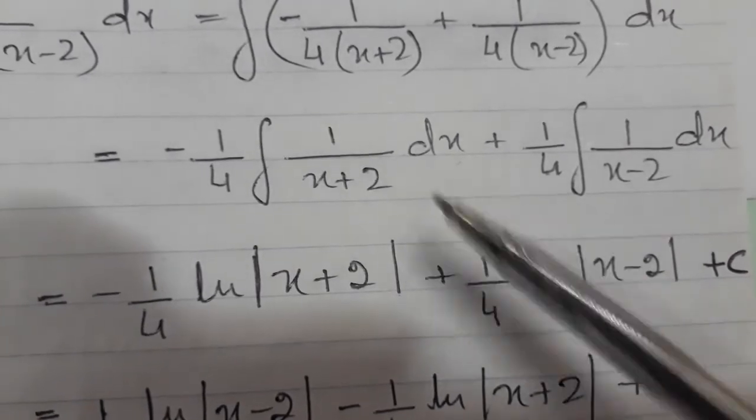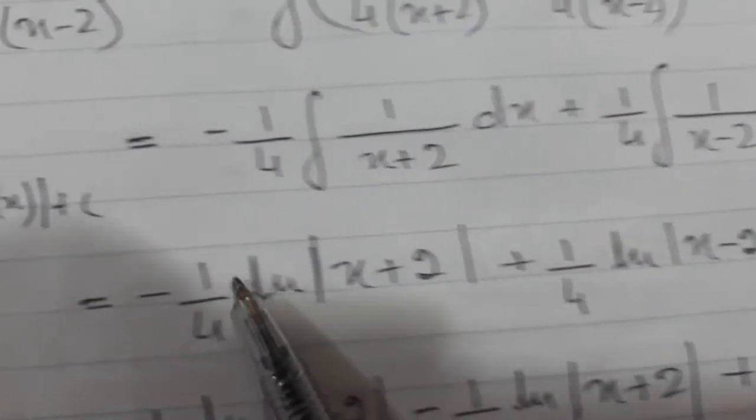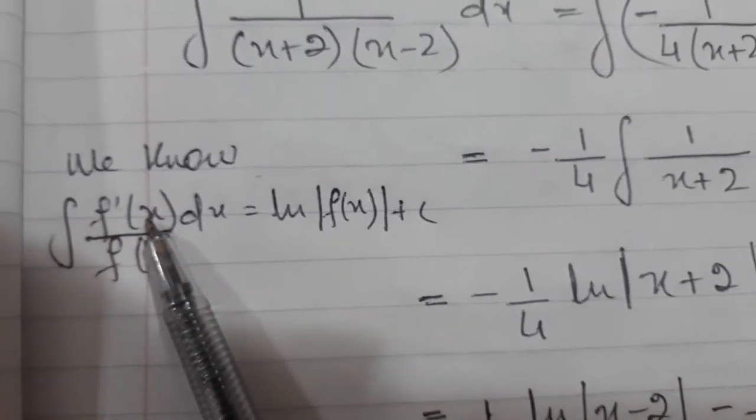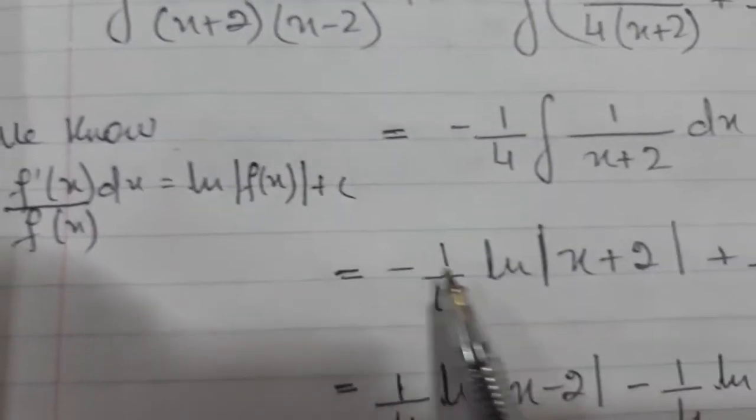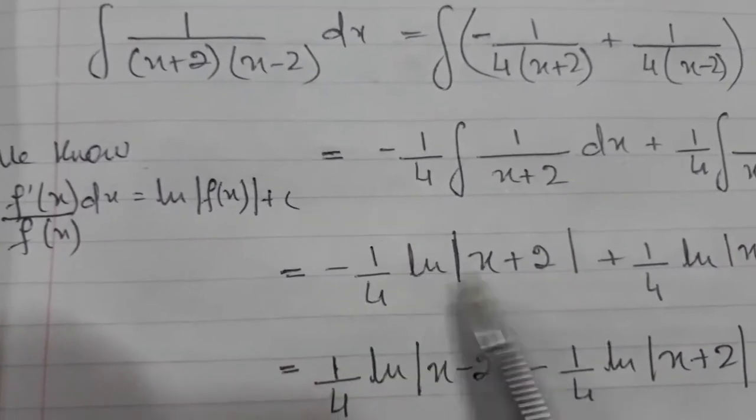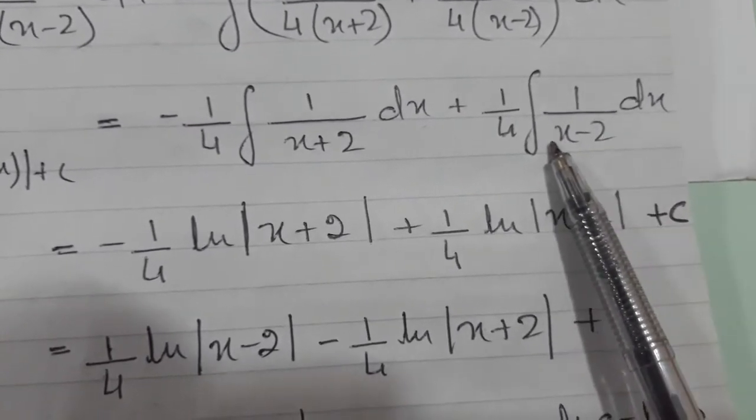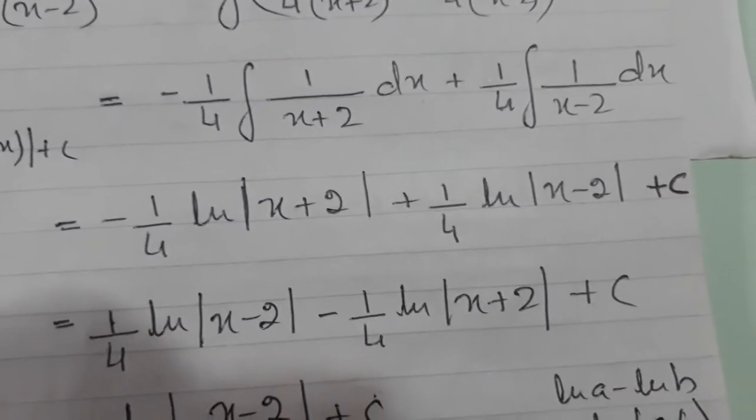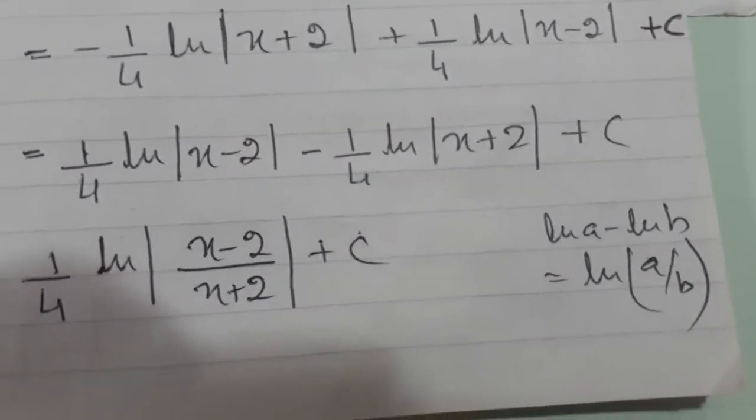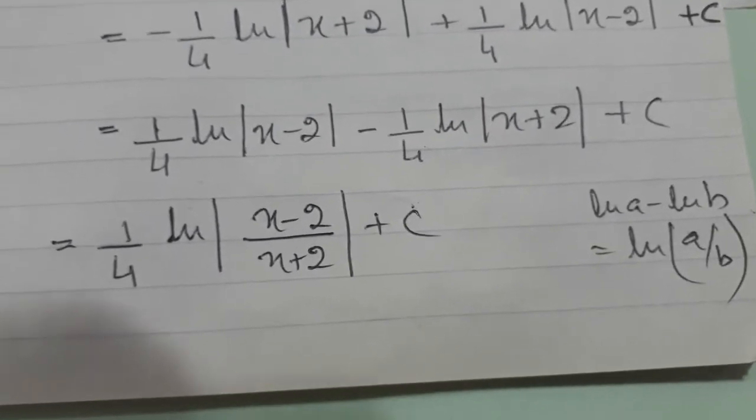We learned in the last video that the differentiation of this is 1, which is present here. If we have a partial fraction such that the differentiation of the denominators present in the numerator, we can write it like this. The differentiation of x plus 2 is 1, which is present here. Hence I can write ln x plus 2 according to this formula. Same thing here: the differentiation of x minus 2 is 1, so it will be 1 over 4 ln x minus 2. After that I'm rearranging, writing positive term first, negative term second, and applying the concept of log. We know that ln A minus ln B equals ln A over B.